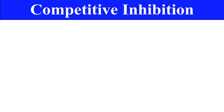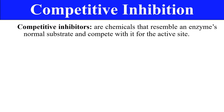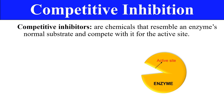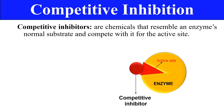The first type is competitive inhibition. As the name indicates, there is some kind of competition — specifically between the substrate and the inhibitor. The inhibitor resembles the enzyme's normal substrate and competes for its active site. For example, this is an enzyme molecule with its active site, and the competitive inhibitor has a structure similar to the substrate and binds to the active site of the enzyme.